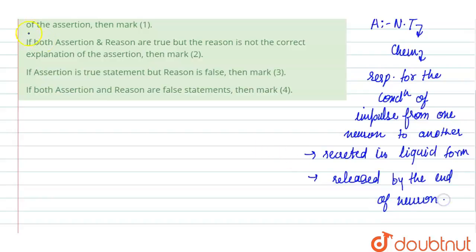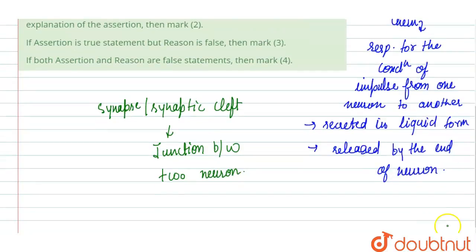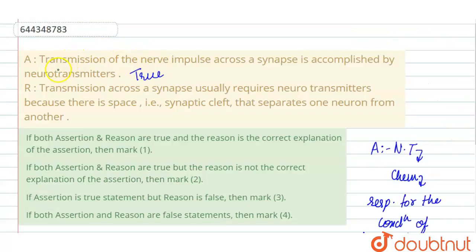Synapse, or the synaptic cleft, is the junction between two neurons where neurotransmitters are released. The neurotransmitters help in the transfer of impulse from one neuron to another neuron, passing through this synapse or synaptic cleft. So the assertion is true.